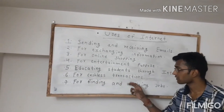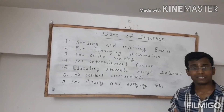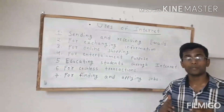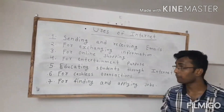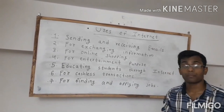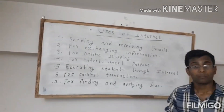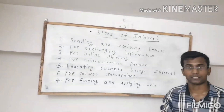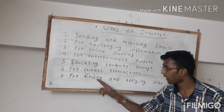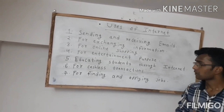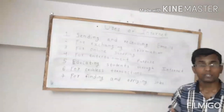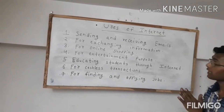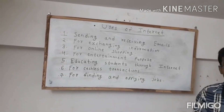Sixth: for cashless transaction. Aaj aap jaise dekh sakti hain — Google Pay, ATM, ya phir koi bhi aisa mode ho, toh uske dwara aap cashless transaction, yani bina paise ke bhi kisi bhi cheez ko purchase karna ya phir paise ka lenden karna, aap kar sakti hain. Seventh: for finding and applying jobs. Kisi bhi job ko dhundhna ya phir job ko apply karna, aap isko bhi ghar baithe internet ke zariye kar sakti hain.